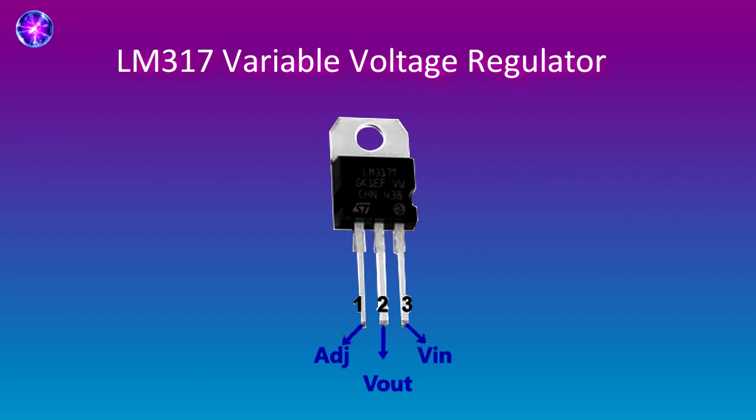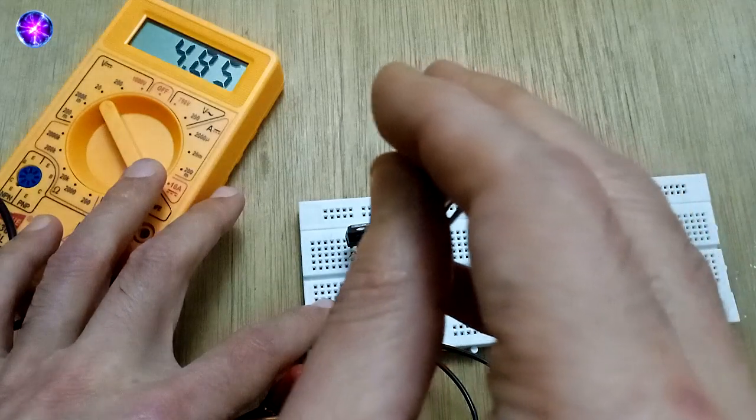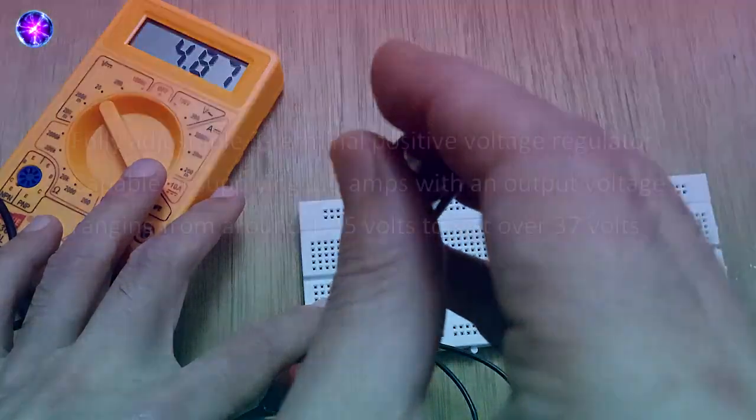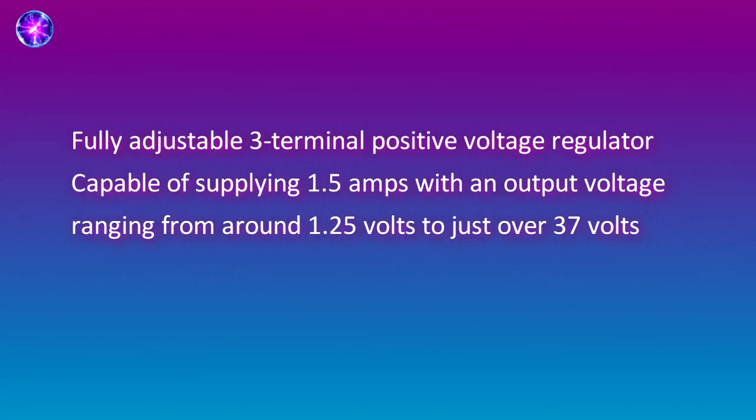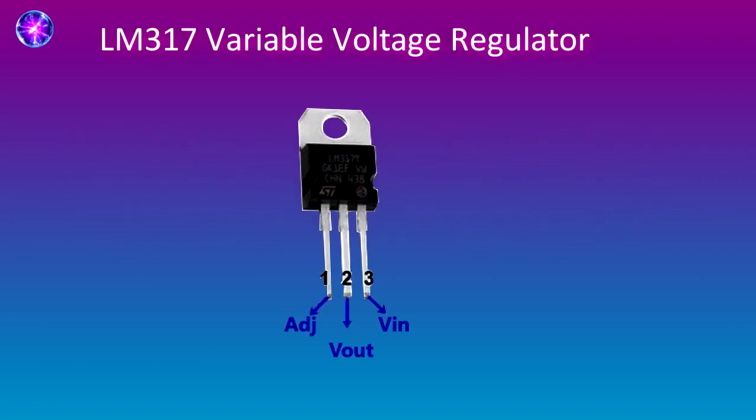...an adjustable 3-terminal positive voltage regulator and is capable of supplying more than 1.5 amps within a voltage range of 1.25 volts to 37 volts or up to 40 volts. It consists of three pins: first one is adjust, second V out, third V in.